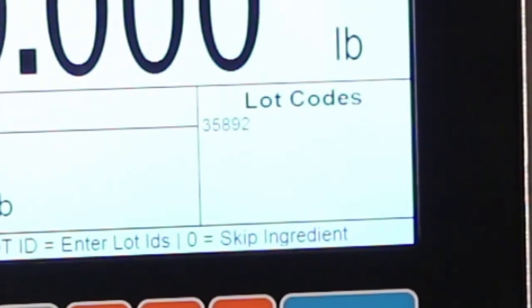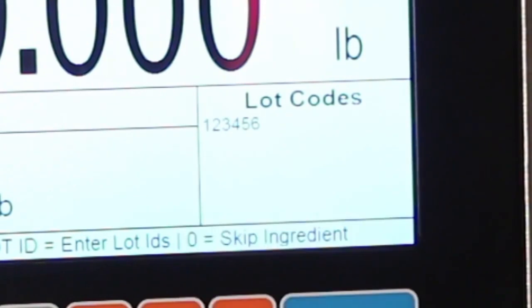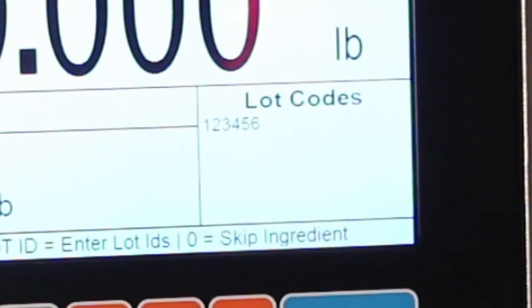You can use the scale's keypad, the optional wireless keyboard, or the method I'll be showing today, the optional barcode scanner. Just a quick pull of the trigger, and the lot ID has been entered fast and accurately. You can see why this is such a popular option.